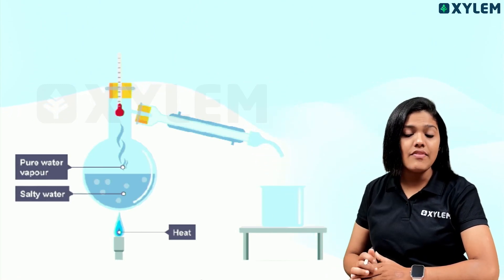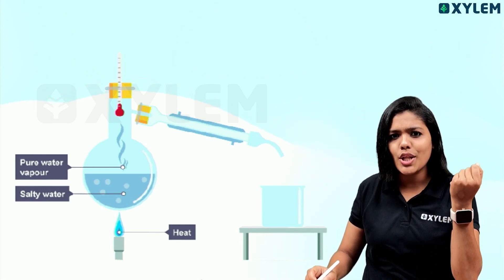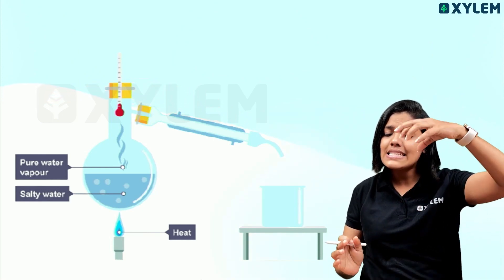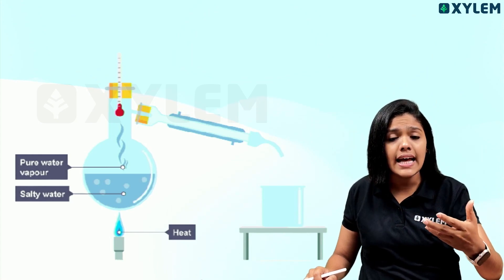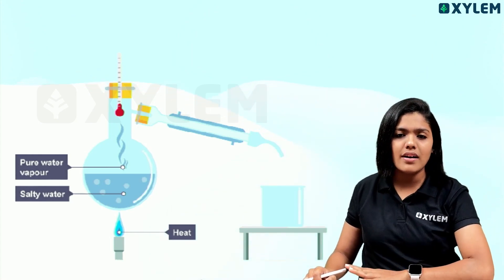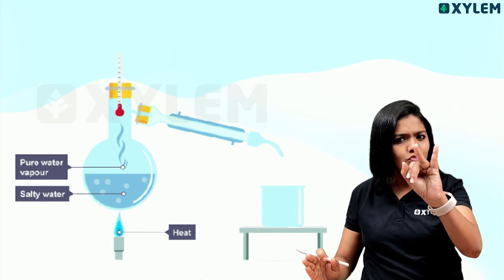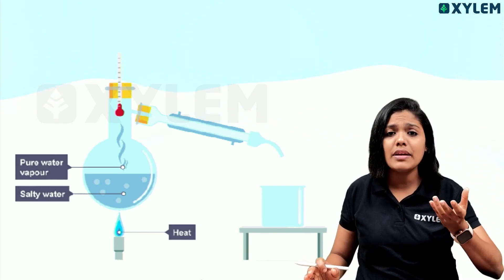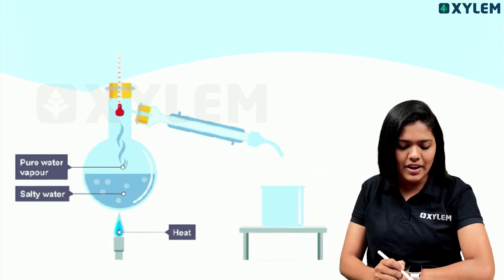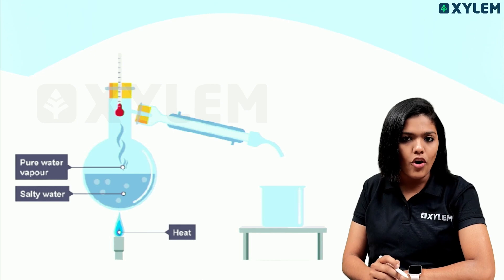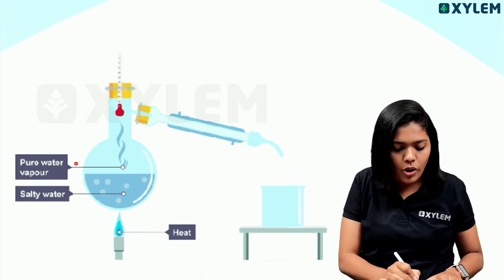For an example, here you can see salty water — salt solution. It changes its state from liquid state. The water vaporizes. This is why we need a round bottom flask — we need a mixture, we need a thermometer.